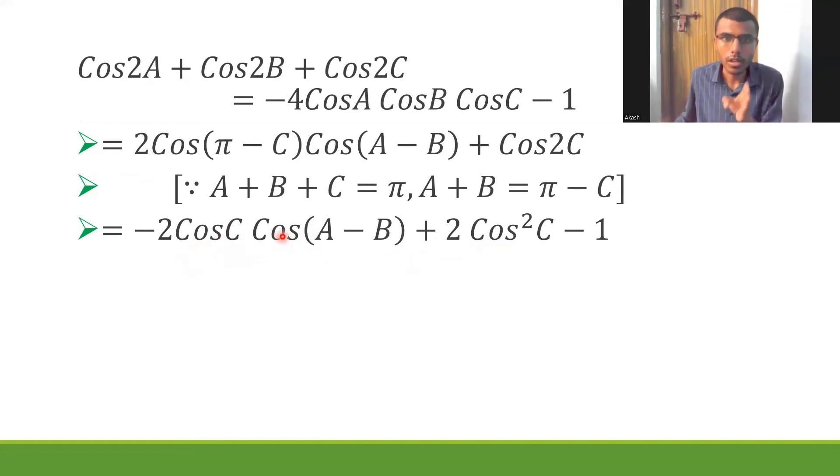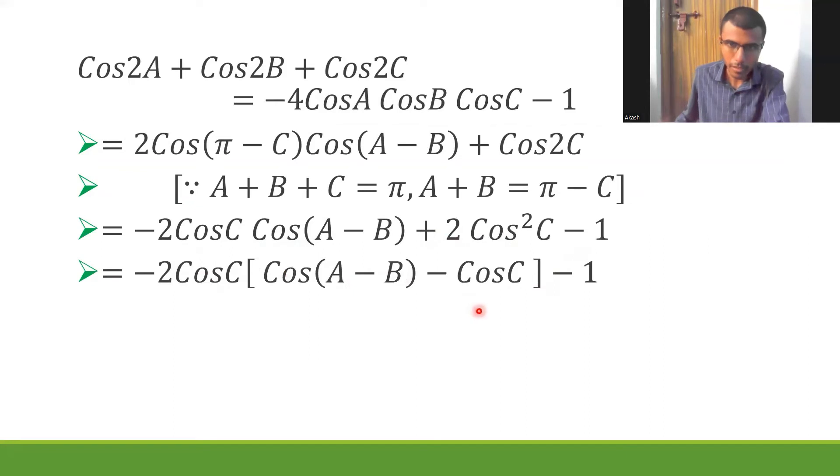If I take -2cosC common, I'd be left out with cos(A-B), and here I'd be left out with -cosC because I'm taking -2cosC common. And this -1 would be there as it is.